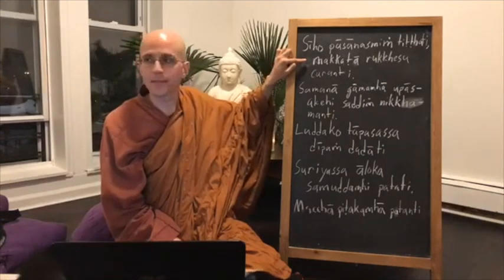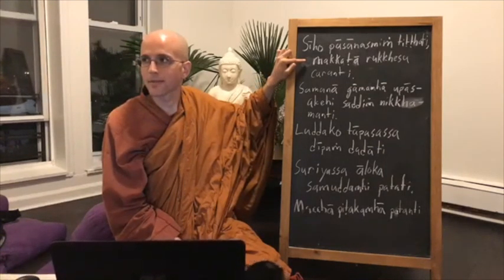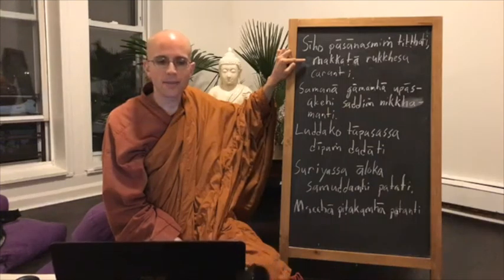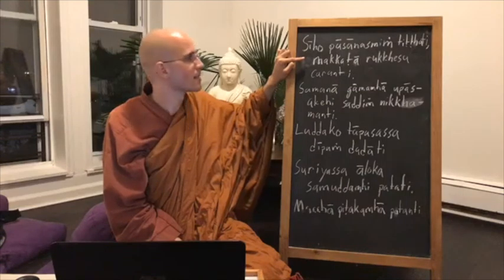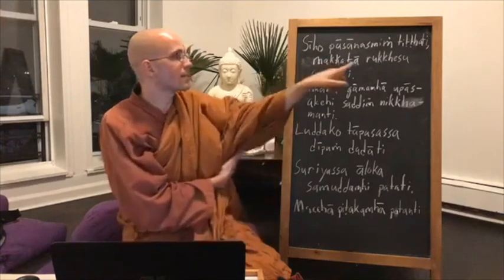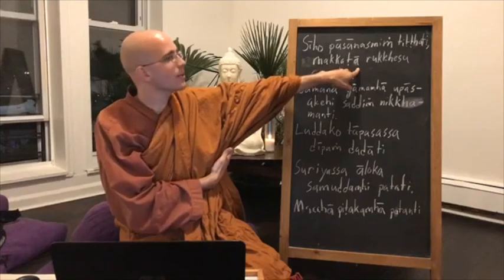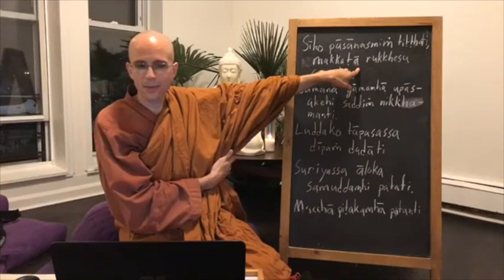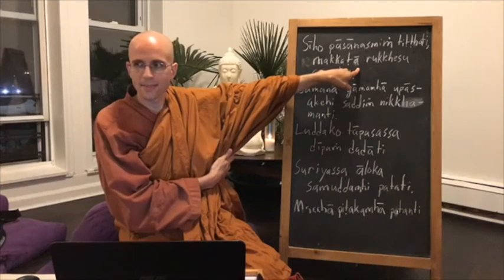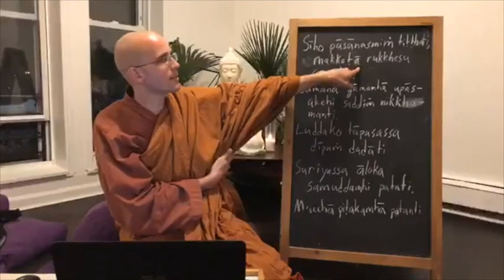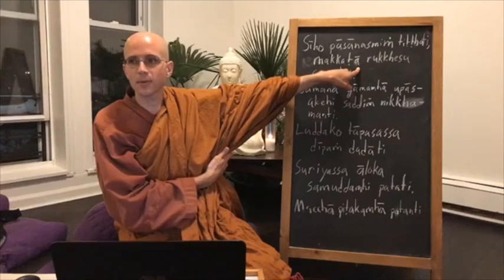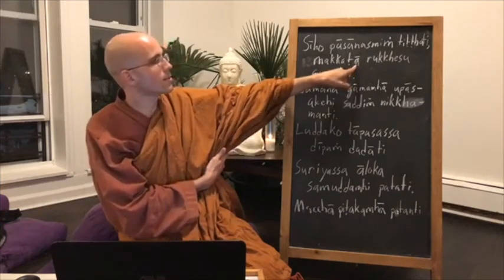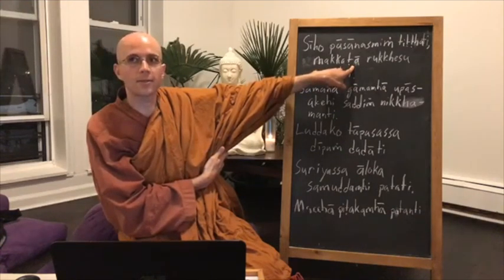Next sentence: Makata Rukhesu Charanti. Makata — monkey — is either nominative plural or singular ablative. Rukhesu is locative plural: 'trees' — in, on, or at the trees. Charanti is third-person plural present tense, meaning 'they move' or 'they go.' Putting it together: 'The monkeys move among the trees.' Locative can also mean 'among.'